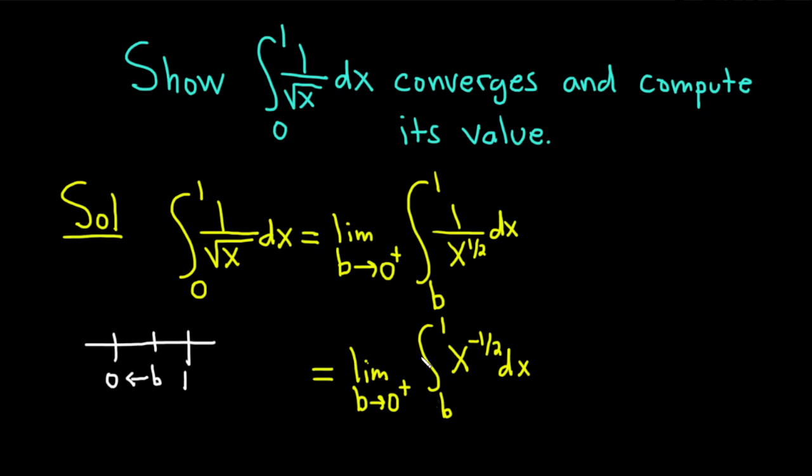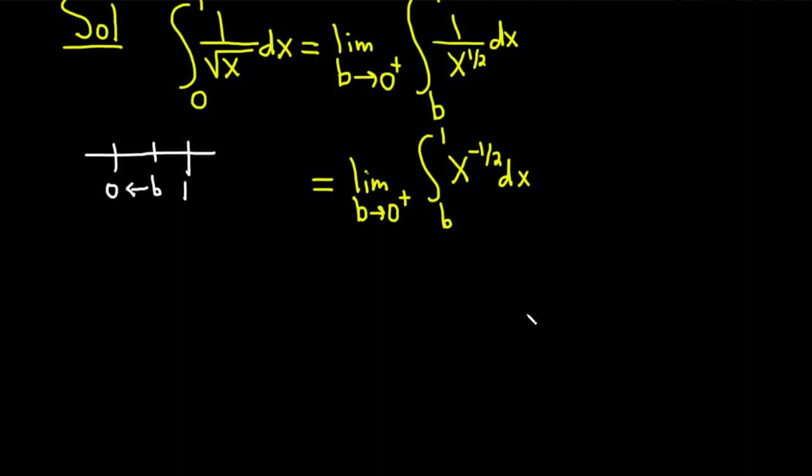Very nice. So now we're ready to integrate. We can simply use the power rule to integrate. This is equal to the limit as b approaches 0 from the right. And the power rule basically says that you add 1 to the exponent and divide by the result. That always works as long as your exponent is not negative 1. If your exponent is negative 1, then you get the natural log of the absolute value of x. In this case, our exponent's negative 1 half, so it works.